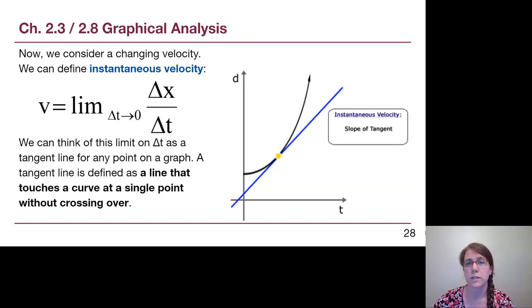So let's consider situations where the velocity is changing. Rather than a constant velocity which would just be a straight line, fairly straightforward to understand, if we have a velocity that is changing then what's really useful for us to know about and think about is instantaneous velocity. How fast are we going at that moment in time?